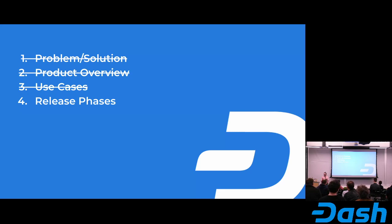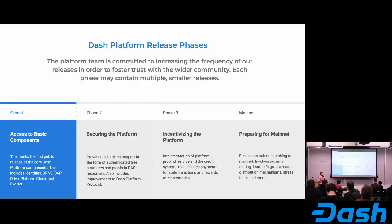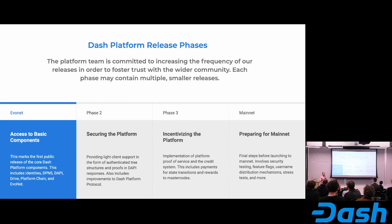Moving on to release phases: the platform team is very committed to making more iterative releases and making our sprint planning and sprint reviews more public. We've talked about having a public monthly sprint review — hopefully starting early in 2020. We've outlined the phases for the EvoNet release into four different phases. Phase one — access to basic components — is what we'll be releasing at the end of the year, and that includes access to the platform chain, the SDK, the name service, and identities.